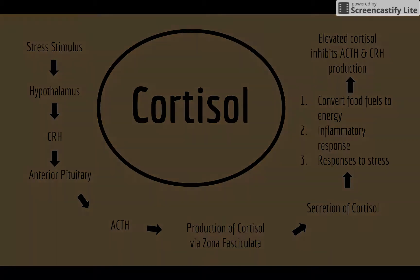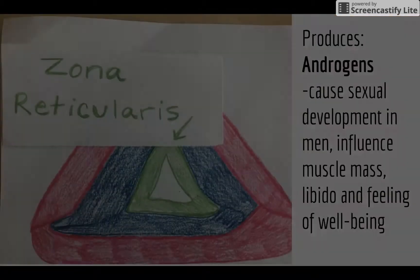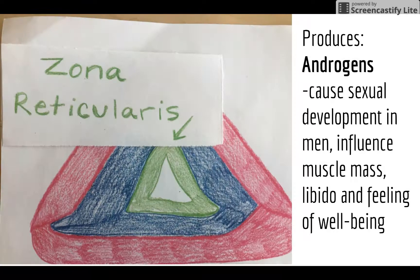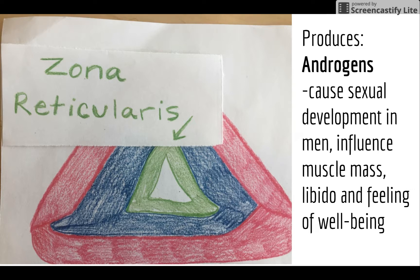The innermost layer is the zona reticularis, and it produces androgens. These sex hormones are produced in small amounts in both males and females. They cause sexual development in men and influence muscle mass, libido, and a feeling of well-being in both men and women.